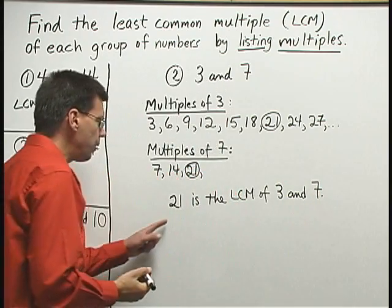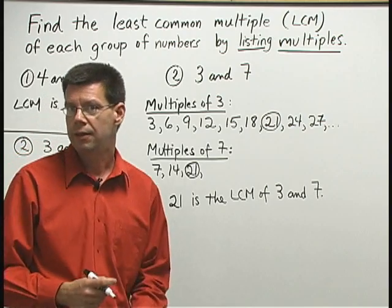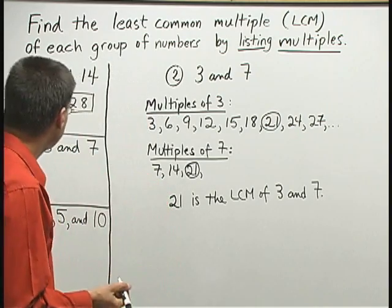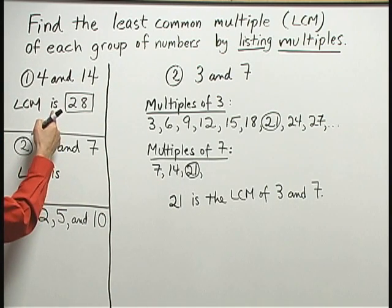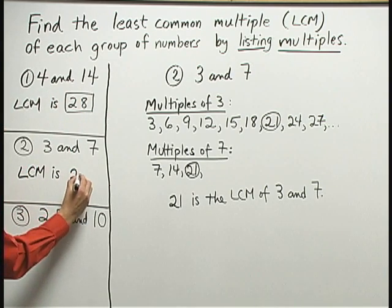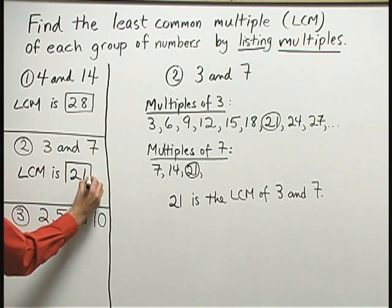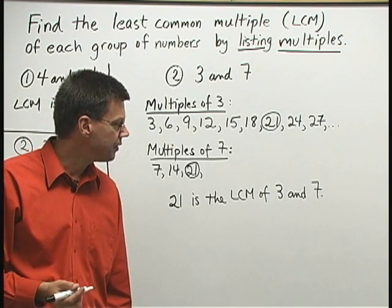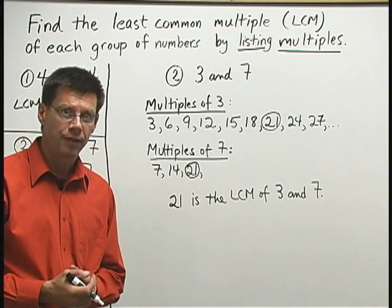Notice here that 21 is 3 times 7. Sometimes you can get the LCM of two numbers by multiplying them together. But that's not always the case. Notice that number 1, the LCM of 4 and 14, was not 4 times 14. You can multiply two numbers together to get the LCM when there's no number other than 1 that goes into both of them.